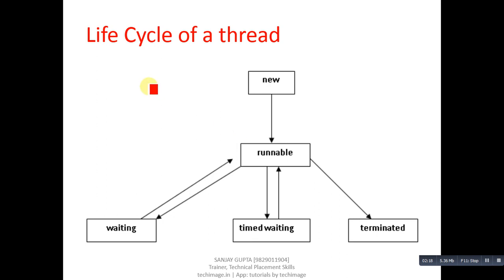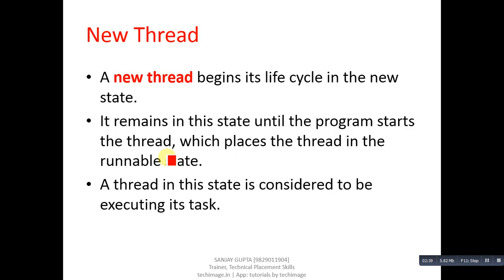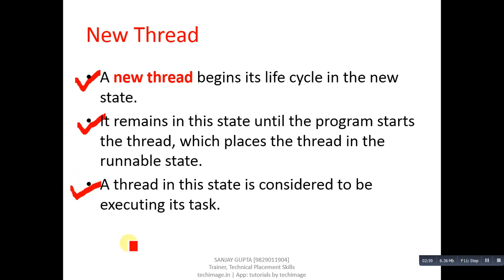You can understand the life cycle of a thread with this diagram. There are five blocks: New, Runnable, Waiting, Timed Waiting, and Terminated. A new thread begins its lifecycle in the New state and remains there until the program starts the thread, which places it in the Runnable state. A thread in the Runnable state is considered to be executing its task.